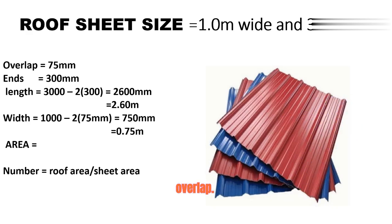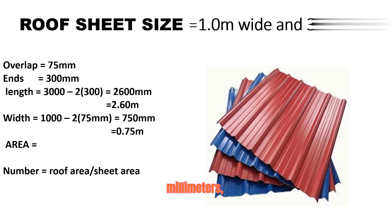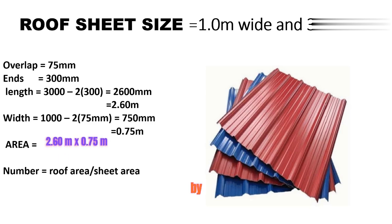The sheets we are taking are 1 meter wide by 3.0 meters long. The overlap is when you are placing one roof sheet and then placing another — they have to overlap by 75 millimeters. On the longer side, the effective length will be 3000 minus the end laps, giving us 2600 millimeters, that is 2.6 meters. The effective width is 1000 minus the lap of 275, leaving us 750 millimeters, that is 0.75 meters.